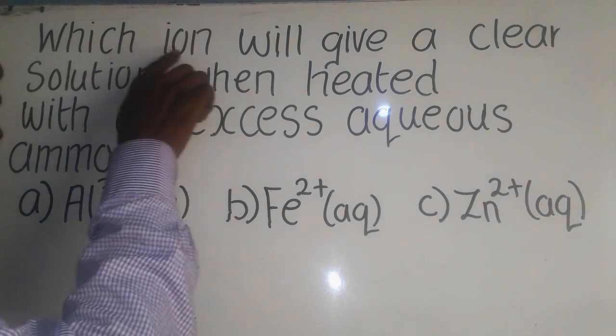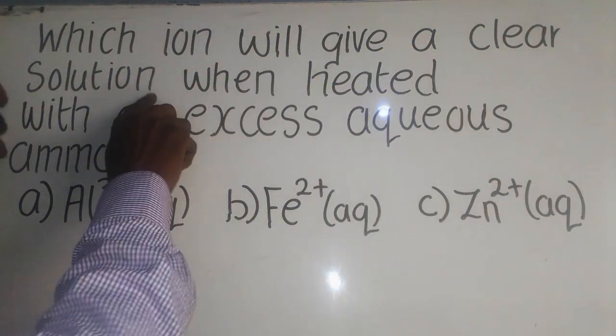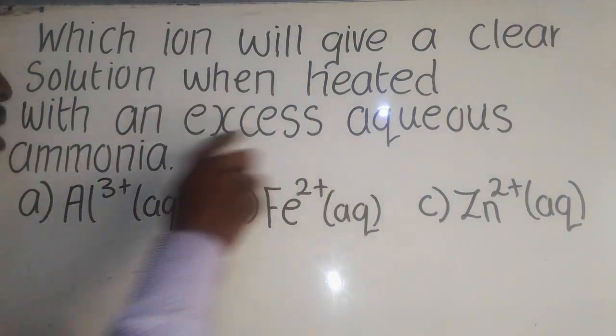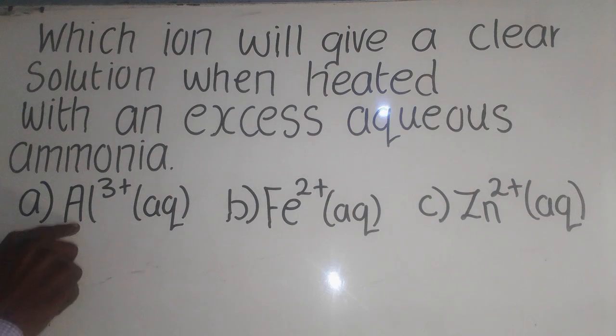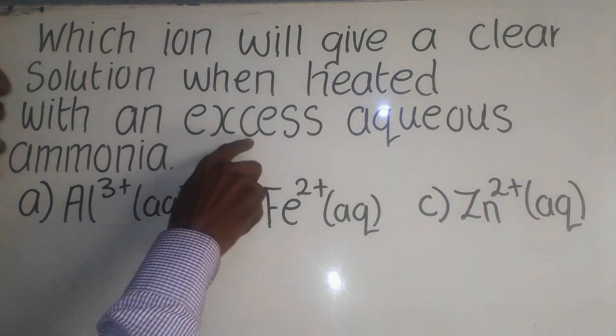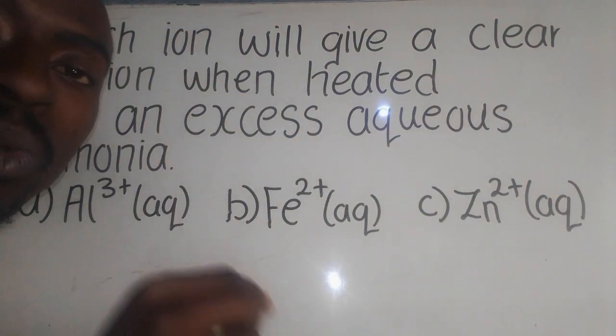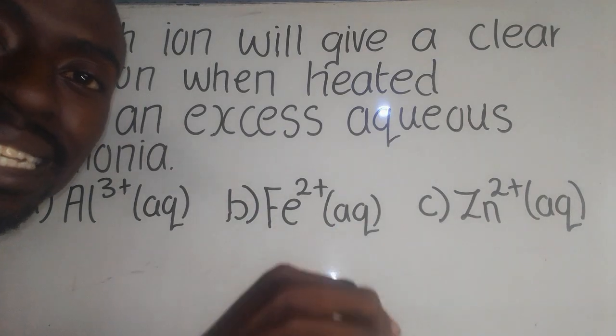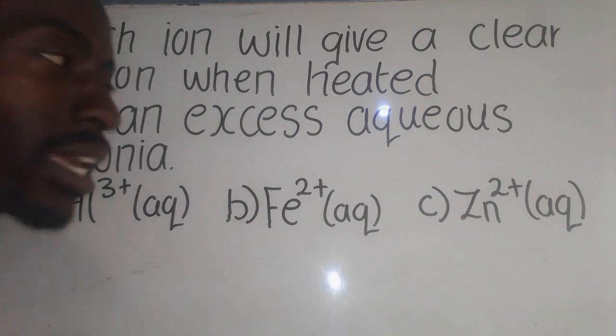Now, they say which ion will give a clear solution when heated with an excess aqua ammonia? We are given aluminium ion. When aluminium ion is heated with the excess aqua ammonia, it forms white precipitate which are insoluble in the excessive ammonia.